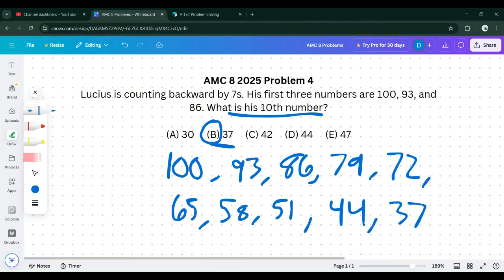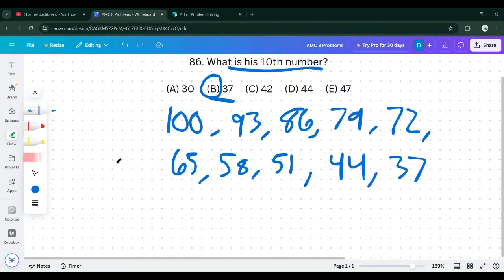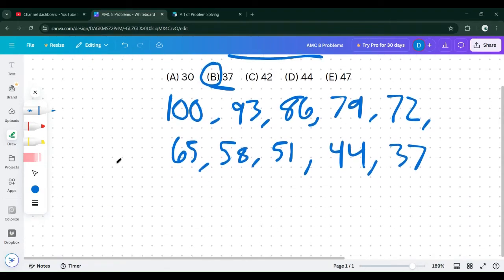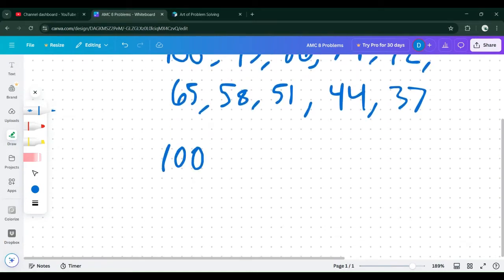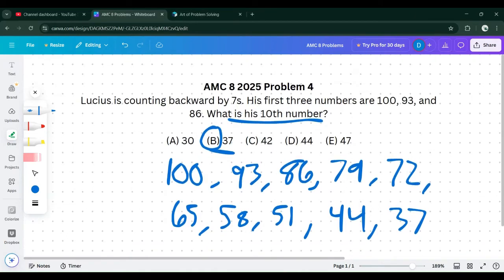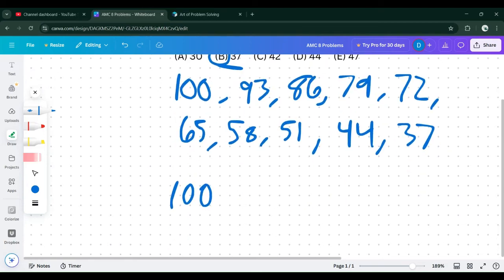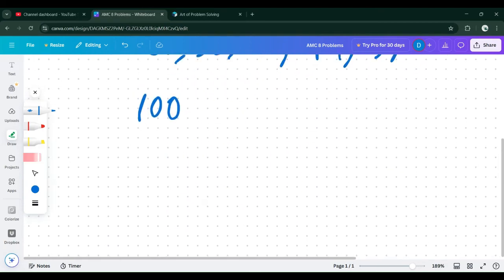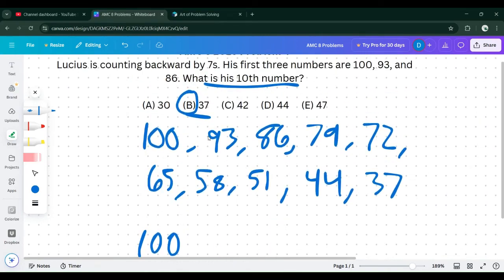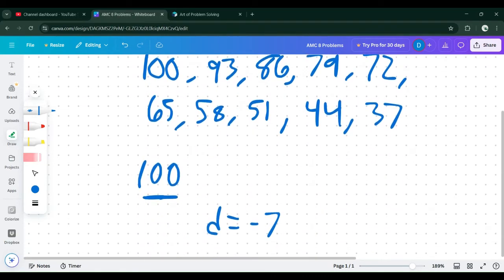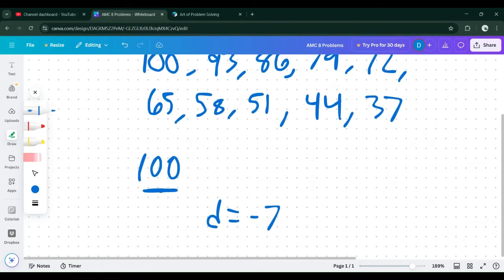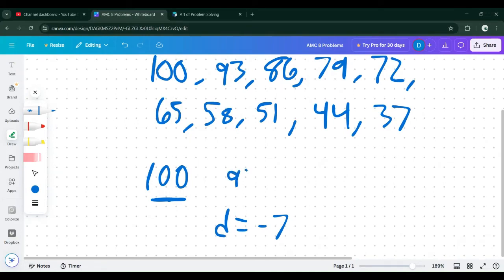I'll show you a different method using a formula, the arithmetic sequence formula. We start with 100. The difference is negative 7 between the first and second, second and third, and each term after that. So d equals negative 7. Since 100 is the first term, there's nine terms after that.